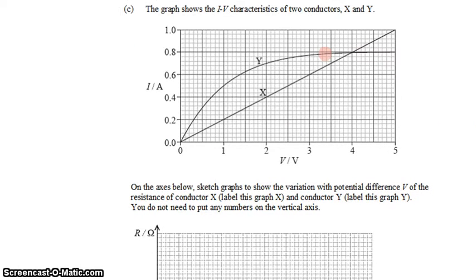So let's start with resistor or component X, which is a little bit more straightforward than Y. We know from Ohm's Law that V equals IR, which means that R equals V over I. If we're looking at resistor X, that's going to be the voltage divided by the current.